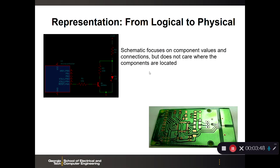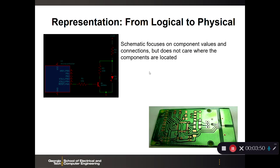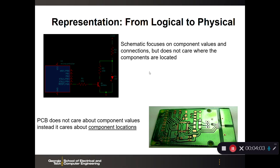The schematic focuses on component values and the interconnects between those components, but doesn't care where the components are located or how big they are. The printed circuit board, on the other hand, doesn't care at all about component values — it is very much interested in where components are going to be, how big they are, and what their footprints are.